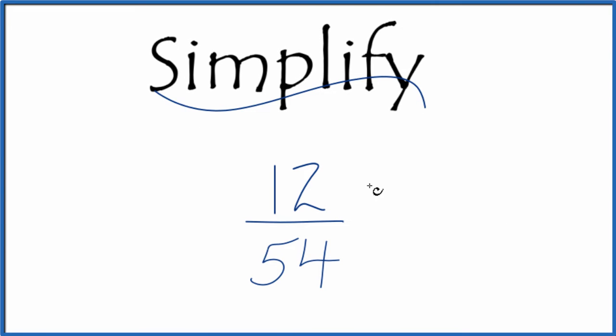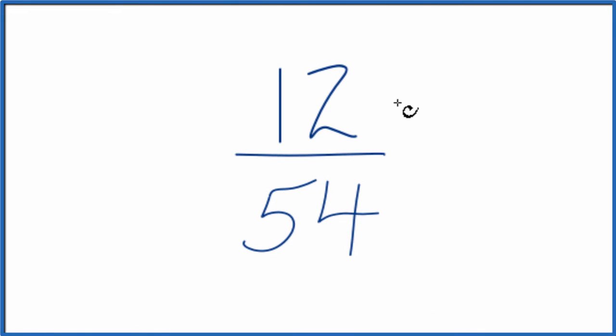Let's simplify the fraction 12/54, and here's how we do it. We're trying to find another fraction that's equivalent to 12 over 54, has the same value as 12 divided by 54. It's just in lowest terms.